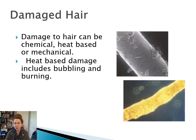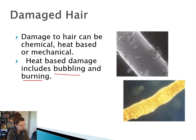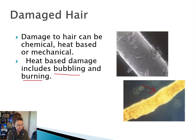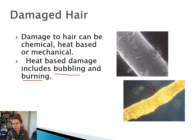Heat-based damage includes two main things: bubbling and burning. Here in the second hair, we see a type of damage called bubbling. Bubbling happens when you have a hair that has extreme heat damage. Usually this forms because hair that was damp was heated to an extreme temperature.